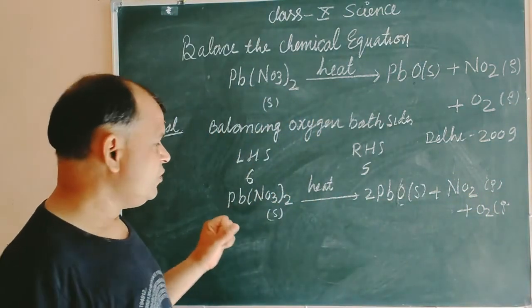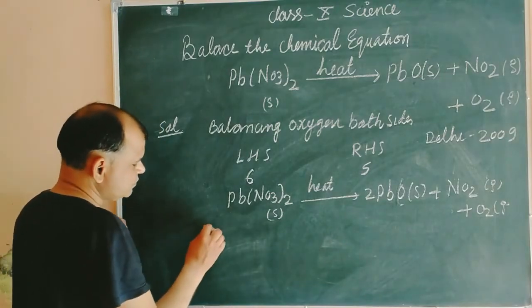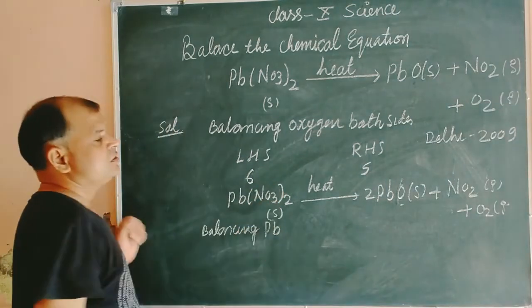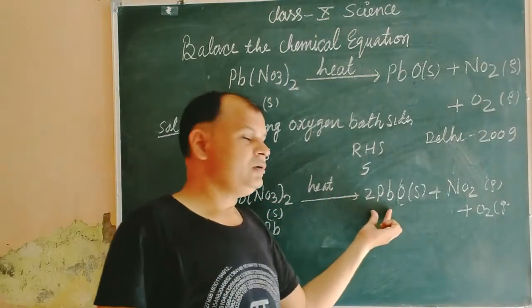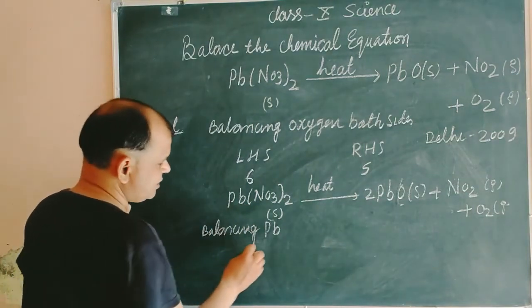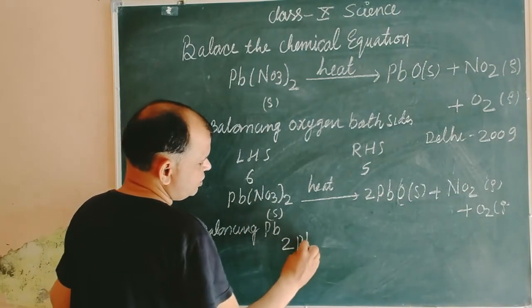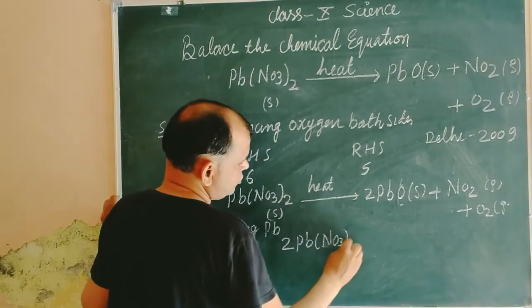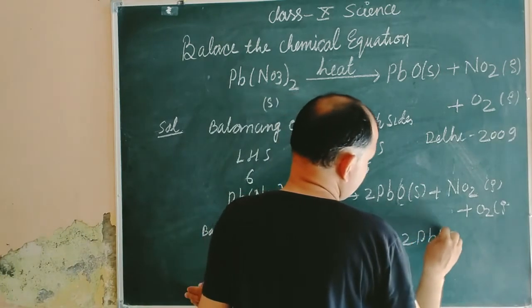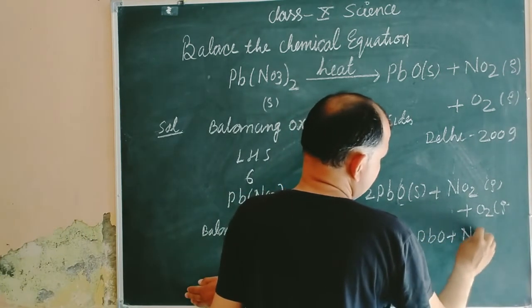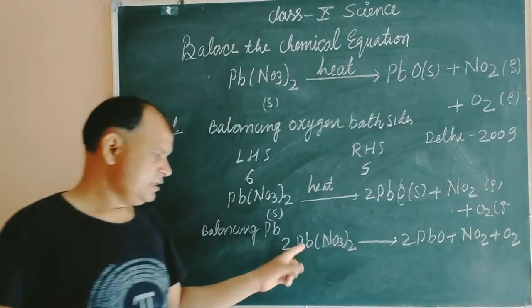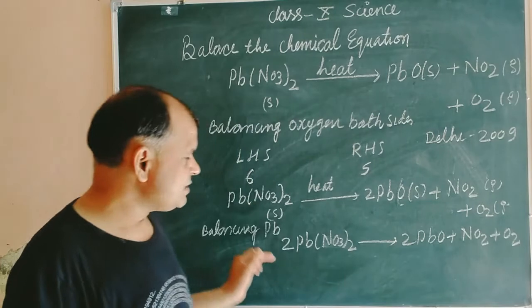Now we balance lead Pb. Here 2 Pb, here 2 Pb, and here is only Pb. So we multiply this side by 2. 2 Pb(NO₃)₂ whole twice, equal to 2 PbO plus NO₂ plus O₂. Now here Pb is balanced, oxygen is also balanced.